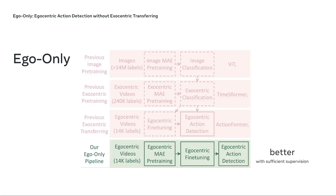In this work, we revisit this decision and propose an alternative approach called EgoOnly that trains models from scratch solely within the egocentric domain. It doesn't depend on any form of exocentric transferring. And surprisingly, EgoOnly performs better given the recent egocentric data collection efforts and the development of masked autoencoders.